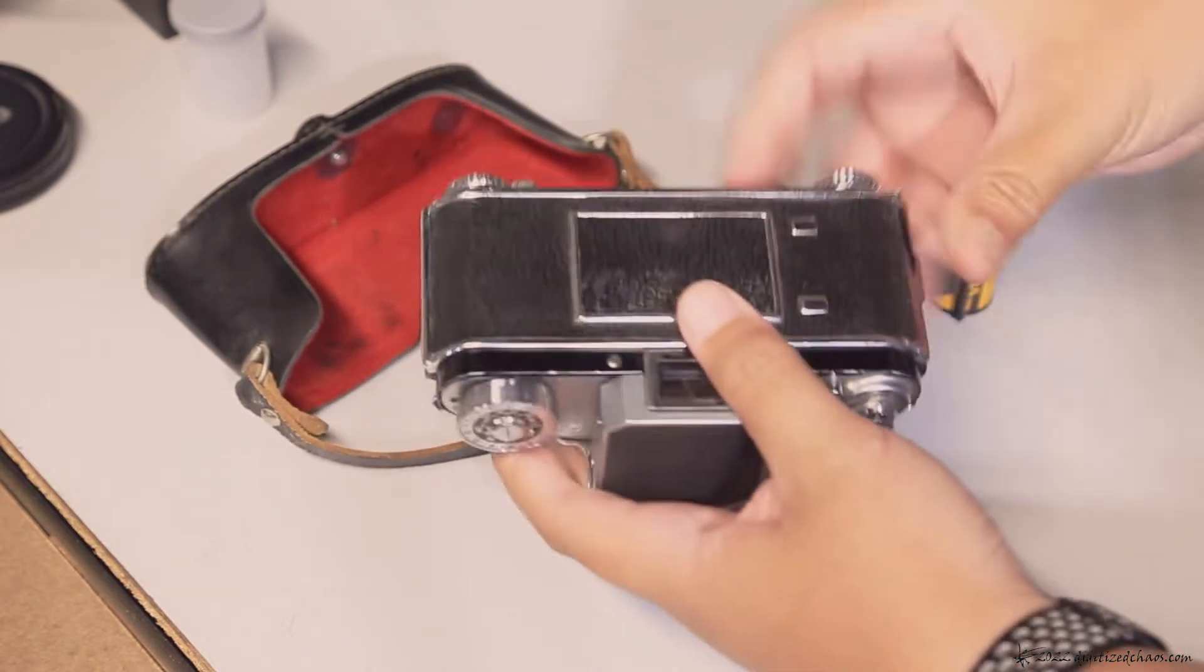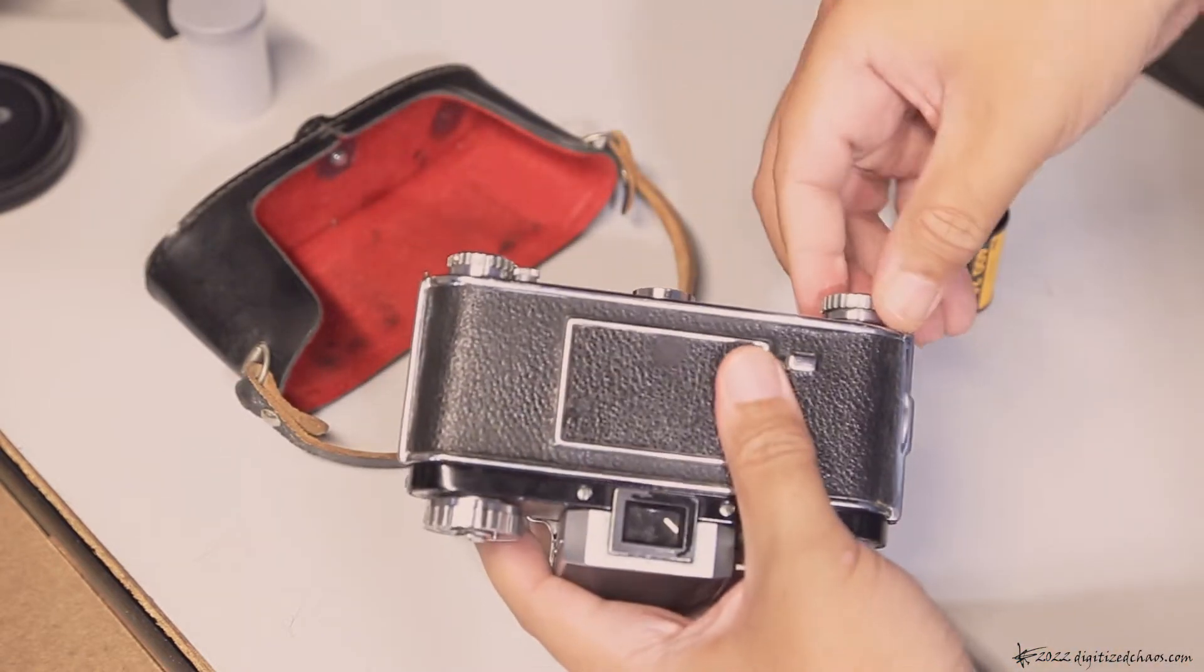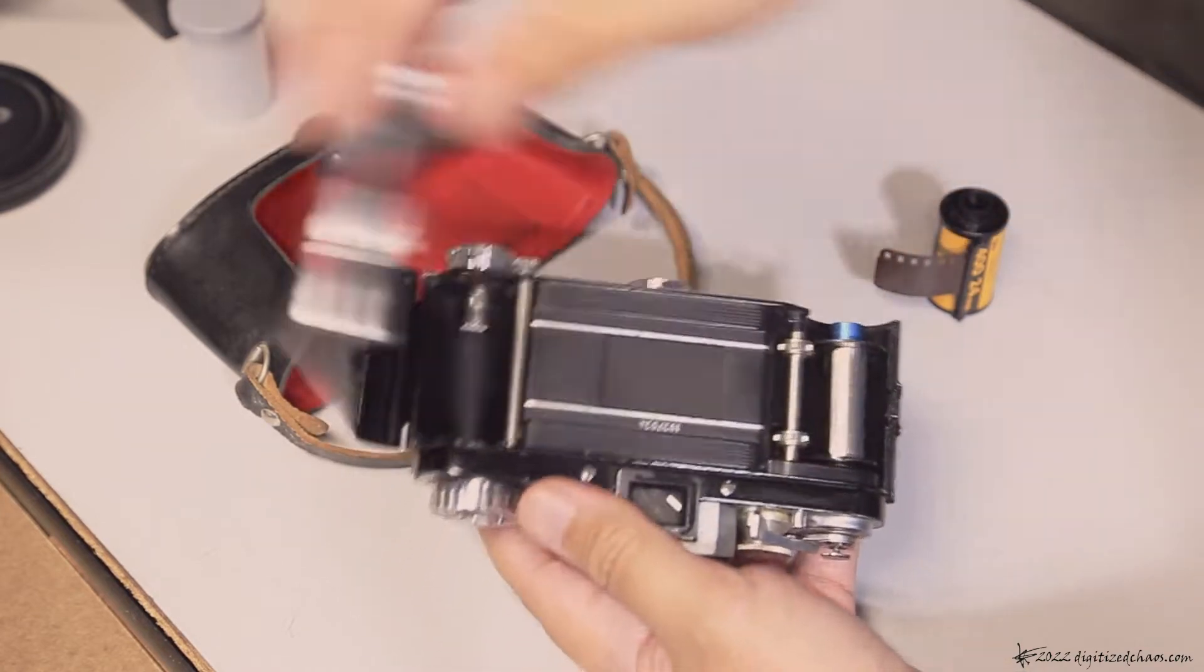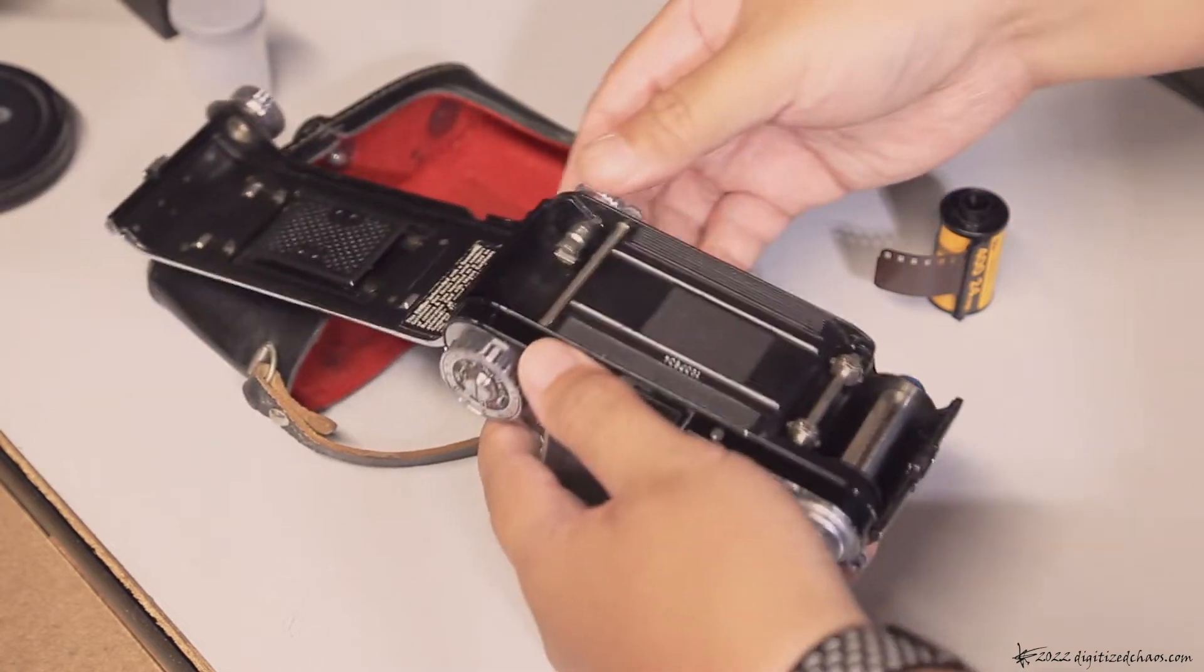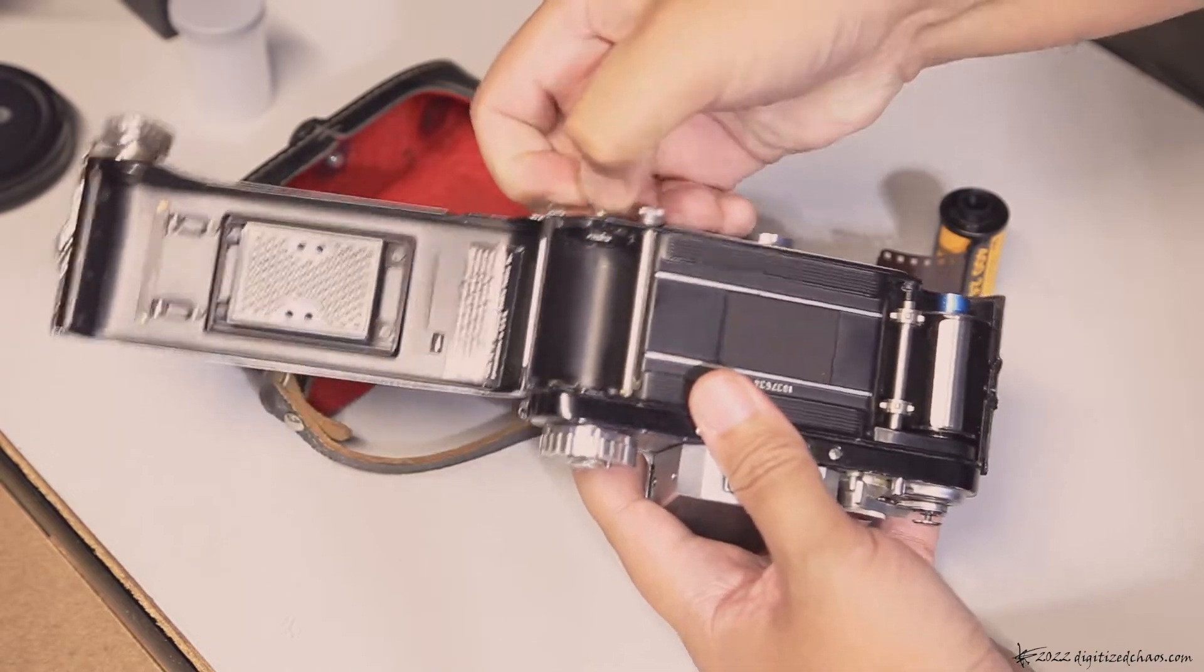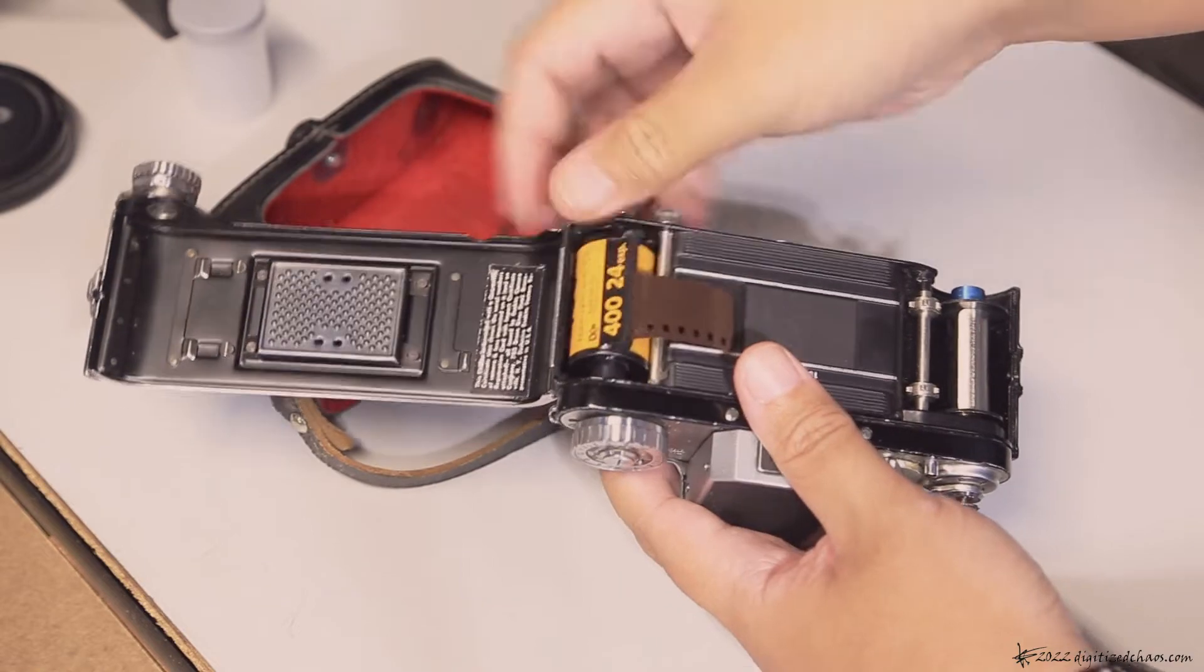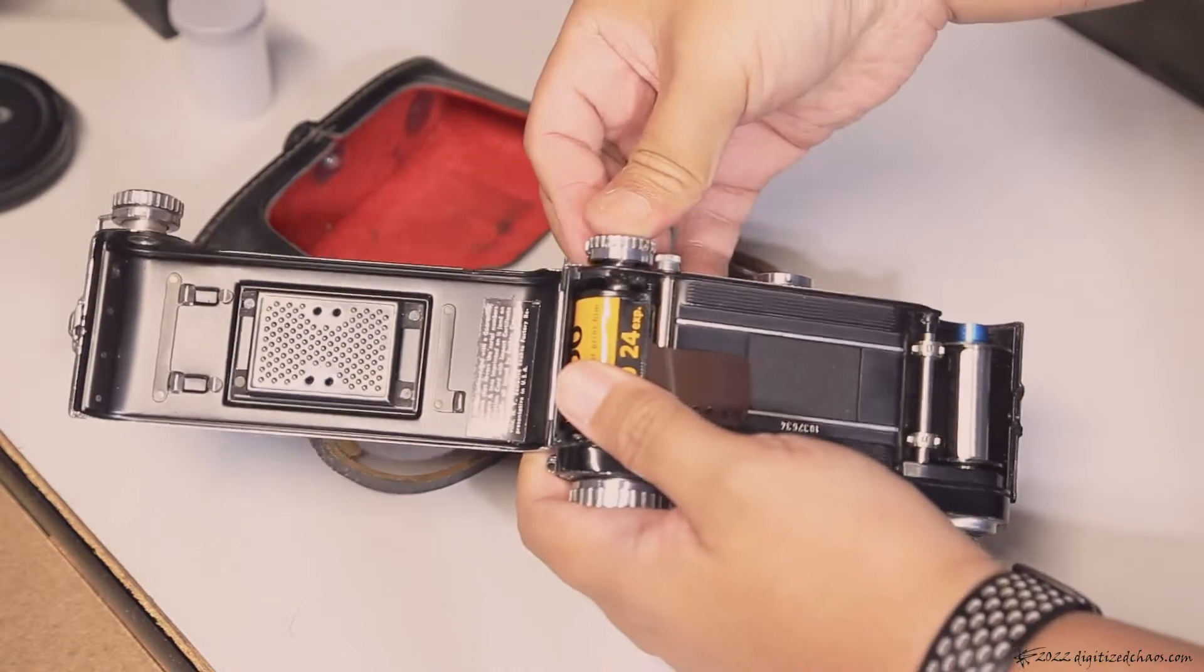To load your film, open the camera back by pulling the knob here and twisting until it stays put. Open the back, pull this, and put in your film canister there. Push it in.